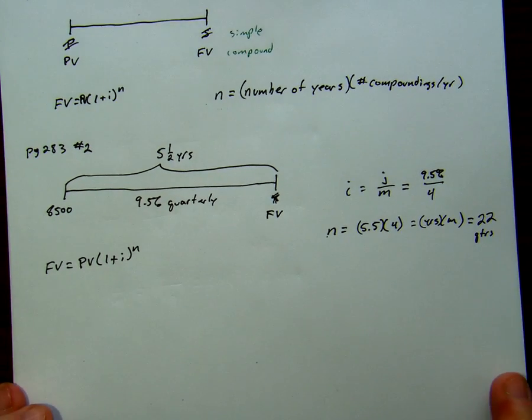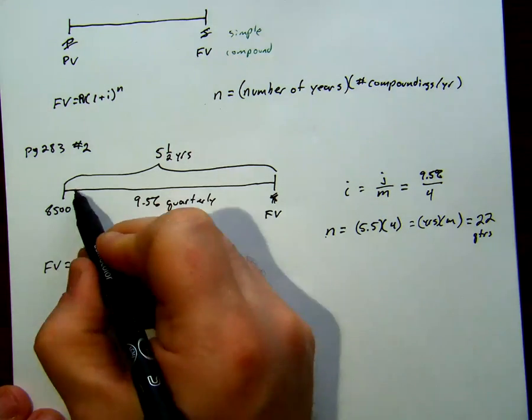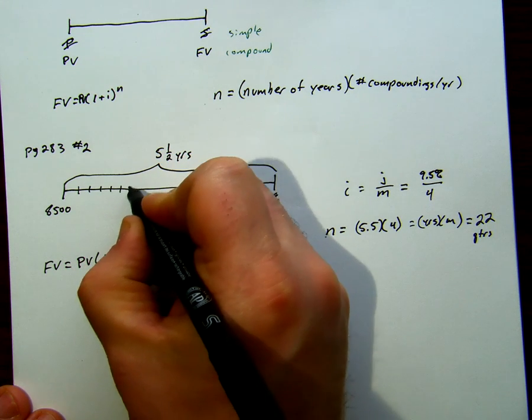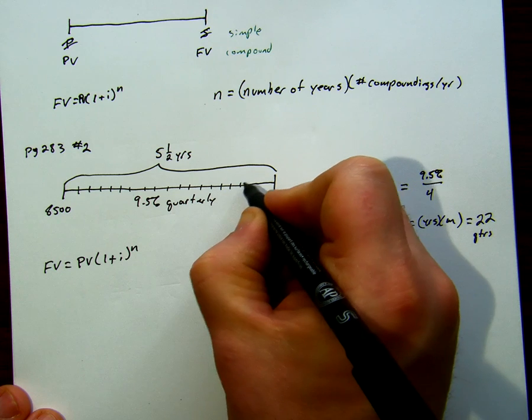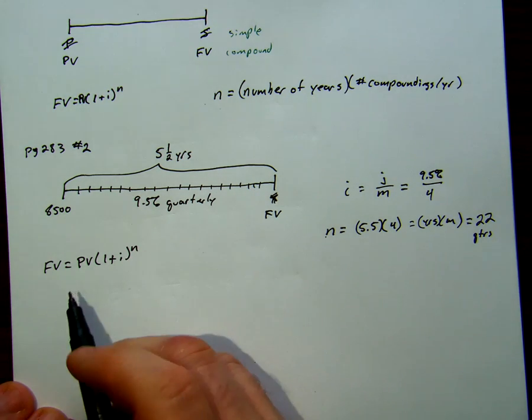So 22 times between when we invested it, we get interest on interest. We break this up. If we were doing a simple interest problem, we'd break this up into 22 little divisions. And every one, we're going to start getting interest on interest, which is a lot of work. But we can use a formula to do that.